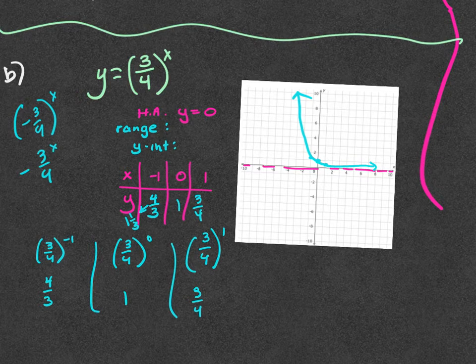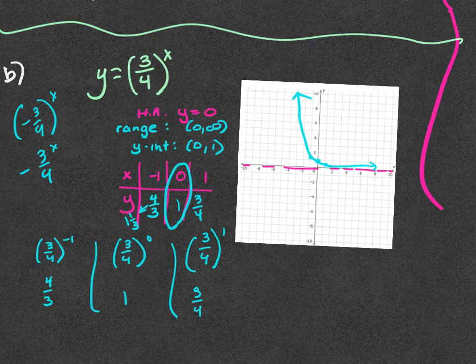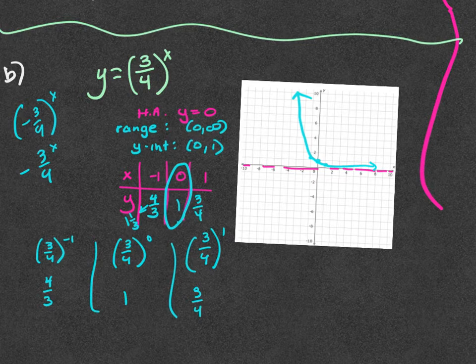So the range is zero to positive infinity and the y-intercept is (zero, one). Get a reference sheet and put: exponential works with the vertical shift. Help yourself out — you get the opportunity to do it.